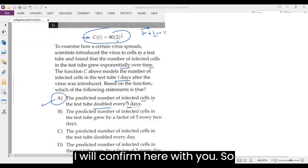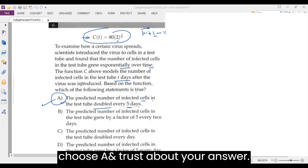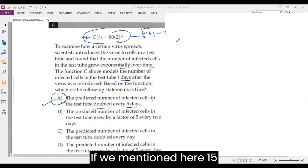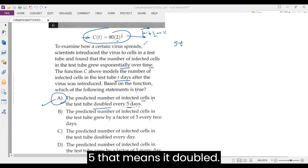But I will confirm here with you, so don't do like this in the exam. Just choose A and trust your answer. If we mention here, 15 is T of 5 over T over 5, that means it's doubled.